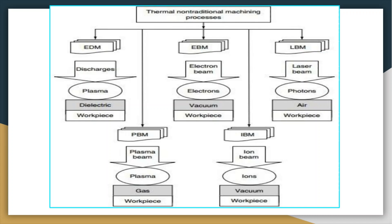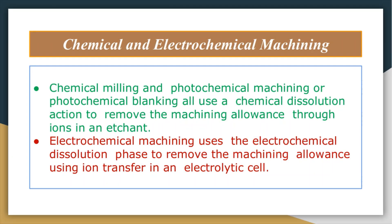In chemical machining, the etching process has a very narrow range of application mainly due to a very low material removal rate and difficulty in finding a suitable etchant for a given work material. On the other hand, electrochemical machining has a very wide field of application — it is a controlled anodic dissolution process yielding high material removal rate, independent of physical and mechanical properties of the workpiece, though the material must be electrically conductive. There is no tool wear, no residual thermal damage, and no burr on the machined surface.